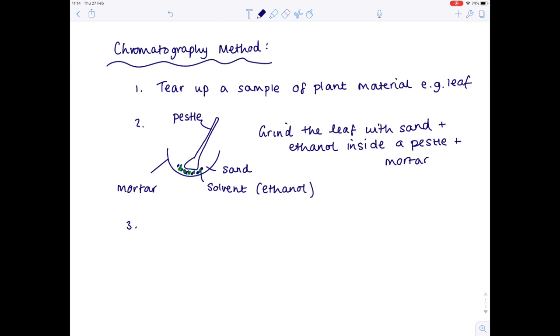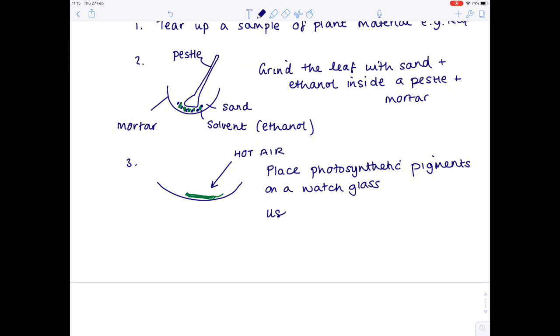Back to photosynthesis and chromatography. So we've obtained our photosynthetic pigments, and we need to now place those on a watch glass. Then you want to direct a stream of hot air at those pigments in order to dry them. And because I can't draw, I'm not going to draw the hairdryer, but that's the simplest way you would do this. Use a hairdryer to evaporate excess water, and then just add a few more drops of your solvent, ethanol.